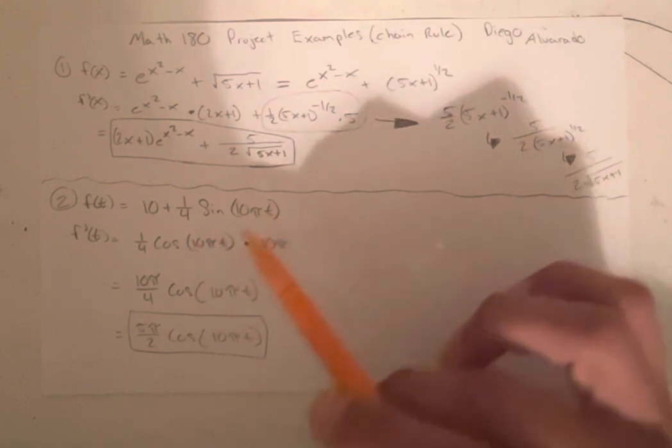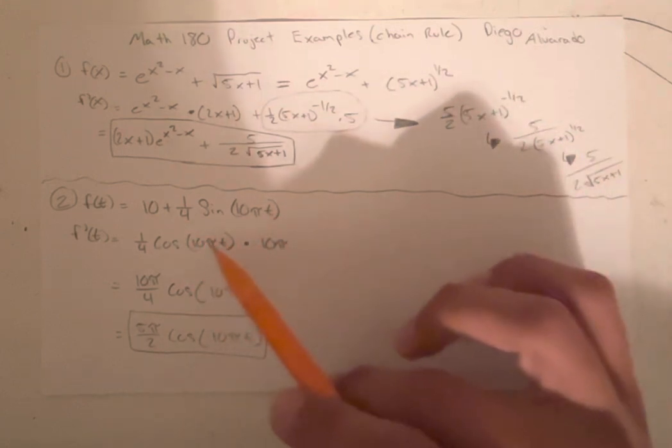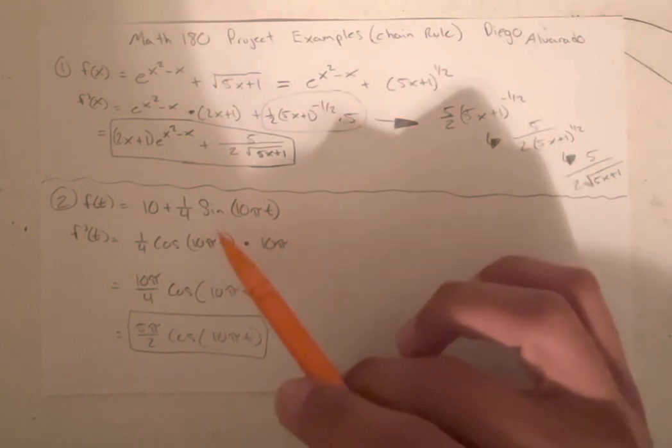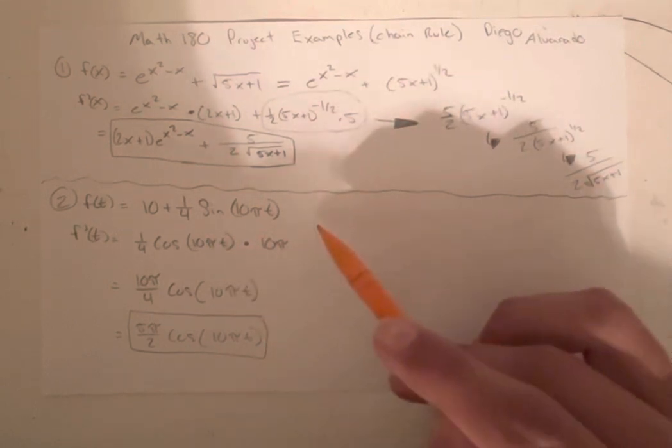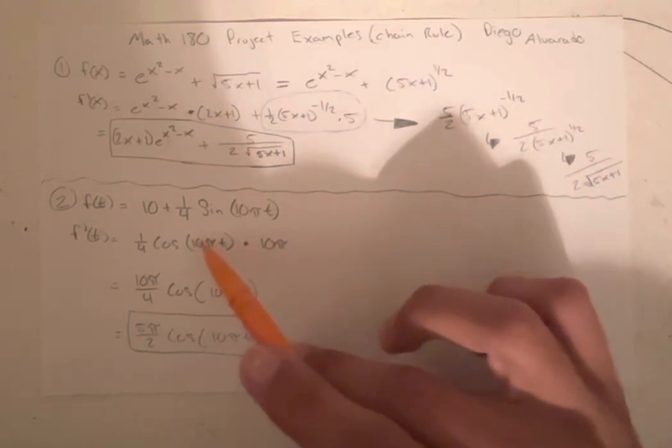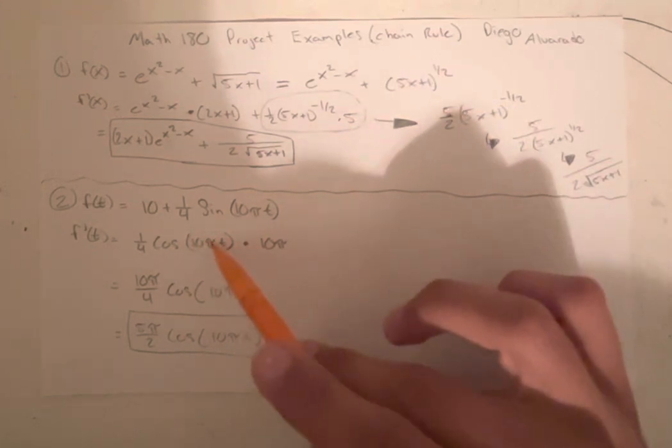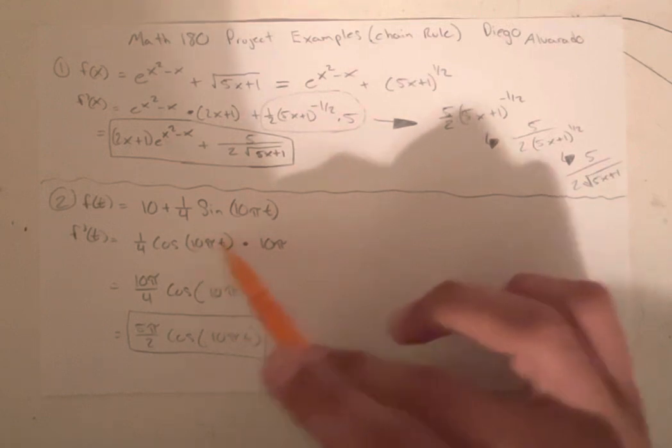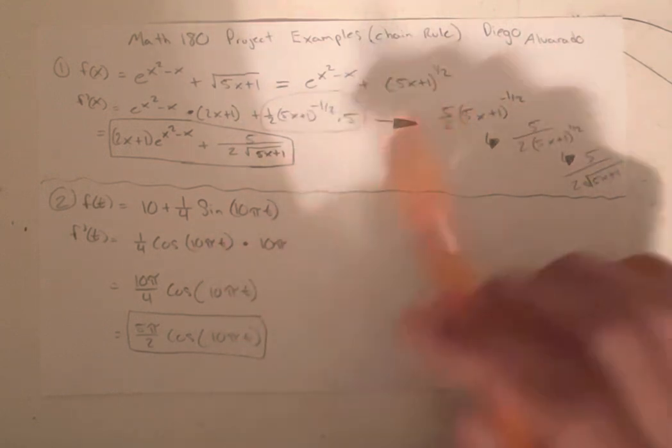The 10 and the pi, don't get it confused. Those are just constants, because pi is just a number. So if you had 2x, the derivative of that would just be 2. So since 10 and pi are both constants, the derivative would just be 10 pi. Since the t just goes away, because you subtract the power and all that.